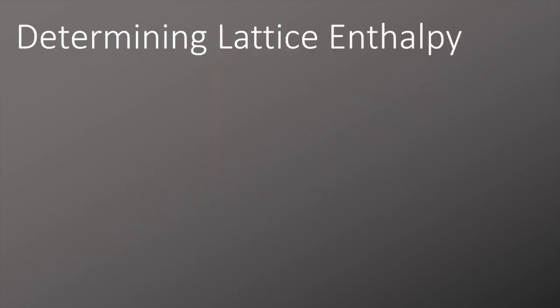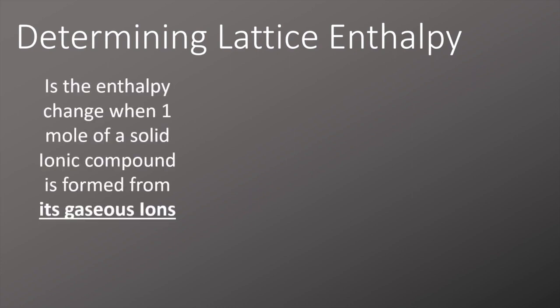When it comes to determining the lattice enthalpy, we're going to have to think about that definition again—it's forming it from a gaseous ion. We need to be able to take the journey all the way from the elements that we start with and turn them all the way through into gaseous ions. This is kind of four simple steps. The first thing we're going to do is take these elements and turn them into gaseous atoms. You might remember this is the enthalpy of atomization.